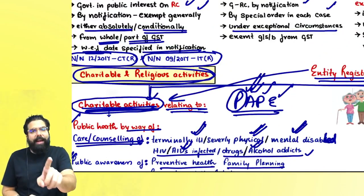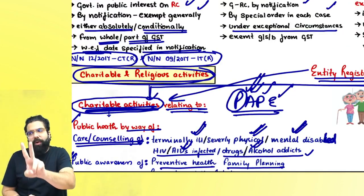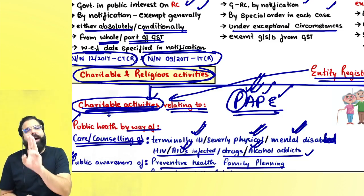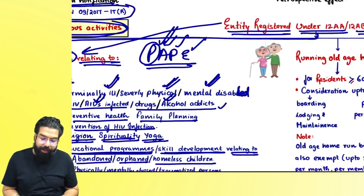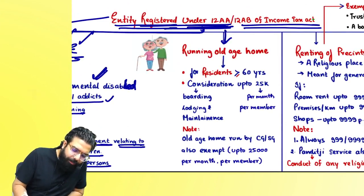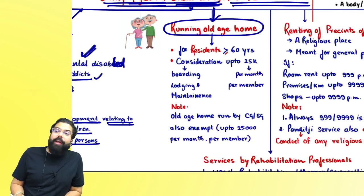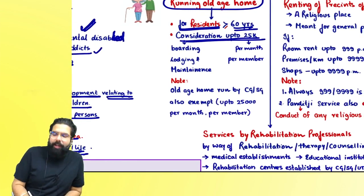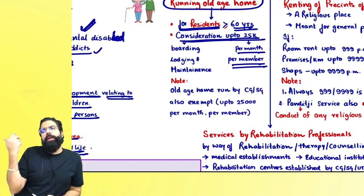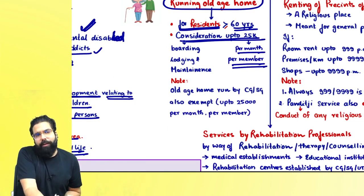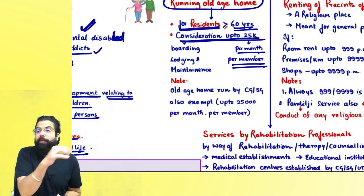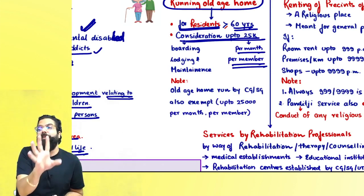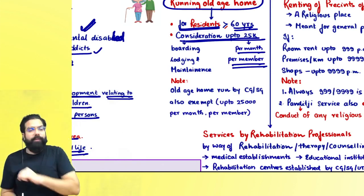P for public health by way of care, counselling, or public awareness. A for advancement of religion, spirituality and yoga. P for preservation of wildlife, forest, environment. E for educational programme and skill development. If a charitable institution is running an old age home, the old age home must be for residents aged 60 years or above, and the consideration should be up to Rs. 25,000 per month per member — then no GST. If more than 25,000, GST will come on the complete amount.